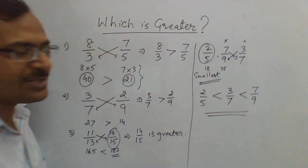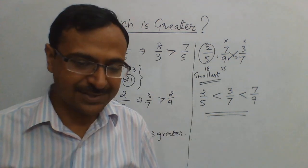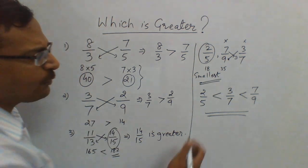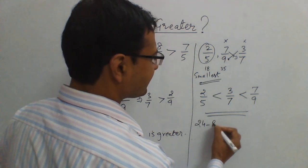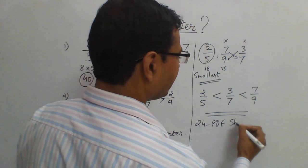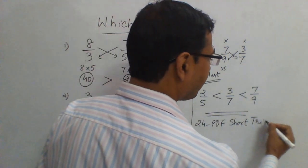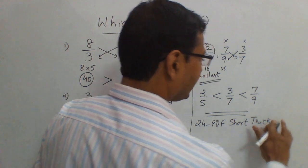So in competitions you need these kind of smart methods. And if you know these kind of smart methods, nothing like it. Go for the 24 PDF short trick course friends. This is just amazing. All these short tricks which I keep on telling you, these are all mentioned in a compiled manner in this course.